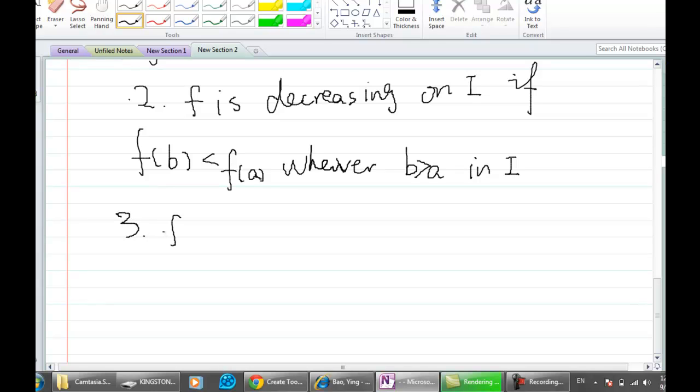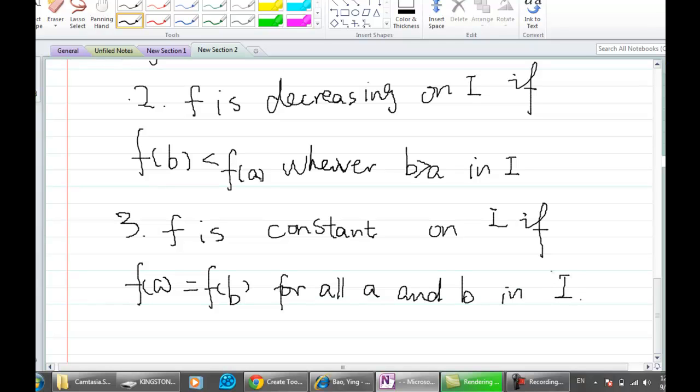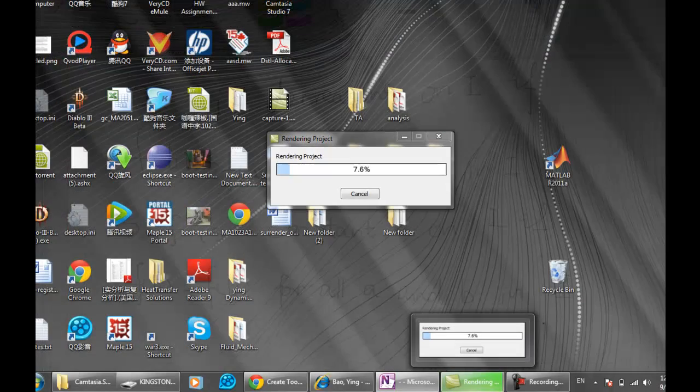And number three: if F is constant on I, if f(a) equals f(b) for all a and b in I, in this interval. That means it's a constant because all our F value is f(a) equals f(b) for every a and b in this interval.